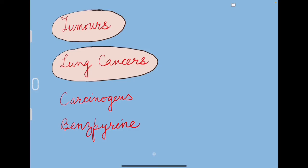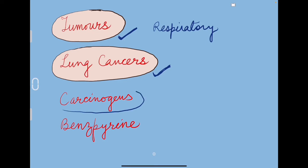Some chronic, non-pathogenic, non-infectious respiratory disorders include tumors — it could be lung cancer — due to carcinogens. Carcinogens are the chemicals responsible for cancers. One important carcinogen here is benzopyrene, produced from tobacco smoke, which causes lung cancer in man.